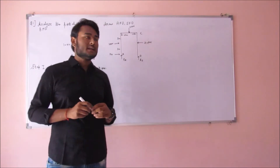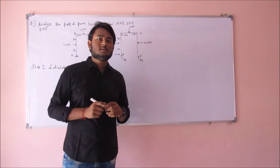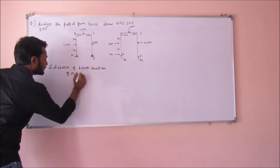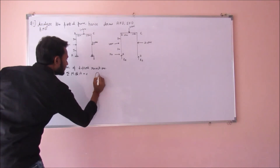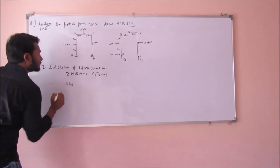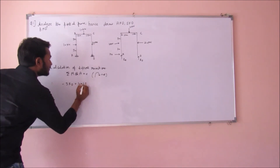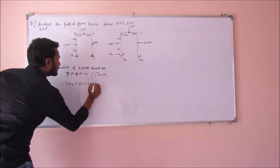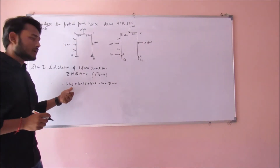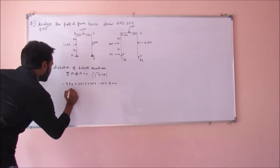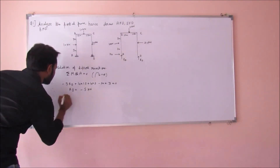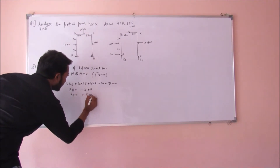First, let us take moment at any one of the external nodes, either A or D equal to zero. Taking moment at A equal to zero, and taking all clockwise moments as positive. After solving this equation, Rd can be calculated. Rd turns out to be minus 5 kN. This means that our assumed direction was wrong. Therefore, Rd is equal to plus 5 kN in the downward direction.